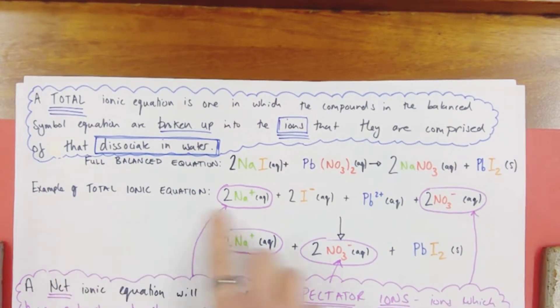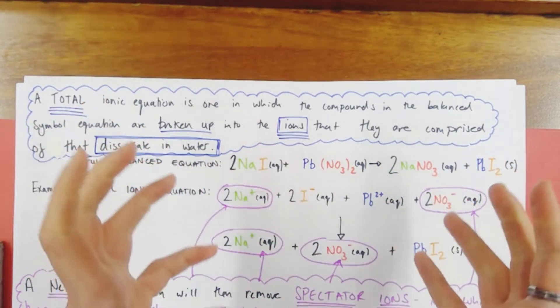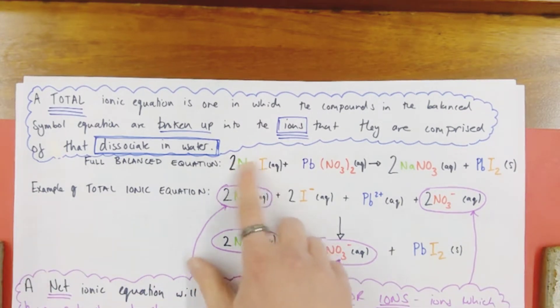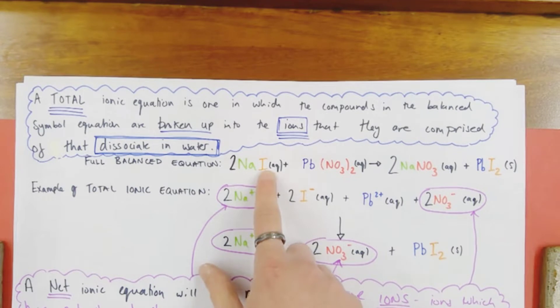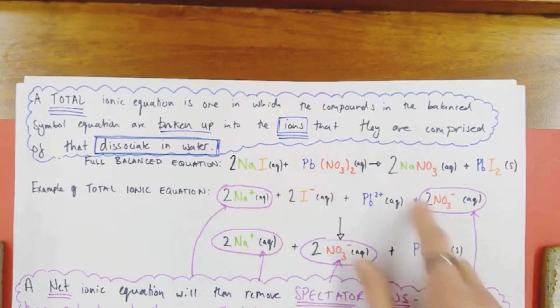So my example of a total ionic equation would be taking these compounds and breaking them or dissociating them apart into their constituent ions and listing those out. So my sodium iodide can be broken up into two sodium ions and two iodide ions that make up the two sodium iodide units. My lead nitrate can be broken up into a lead ion, 2+, and two nitrate ions, NO3-, which are two of them.